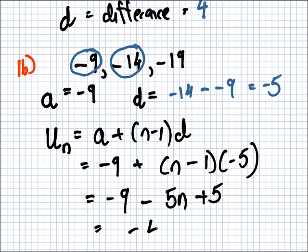Minus 9 plus 5 is minus 4. So, the answer is minus 4 minus 5N. That's the formula for the Nth term. Is this example okay? Do you need to write it down? We'll wait a moment.